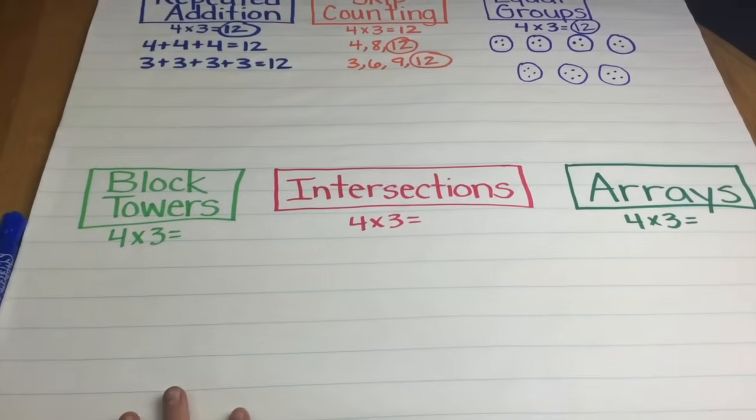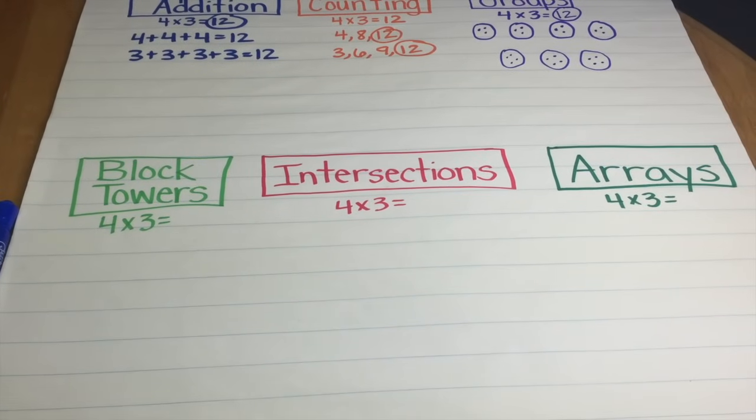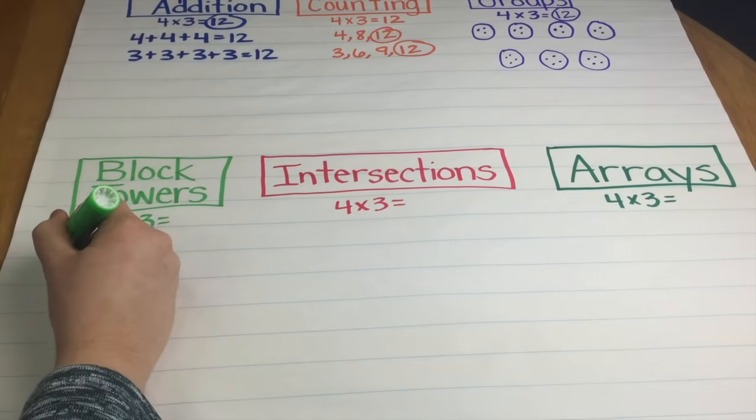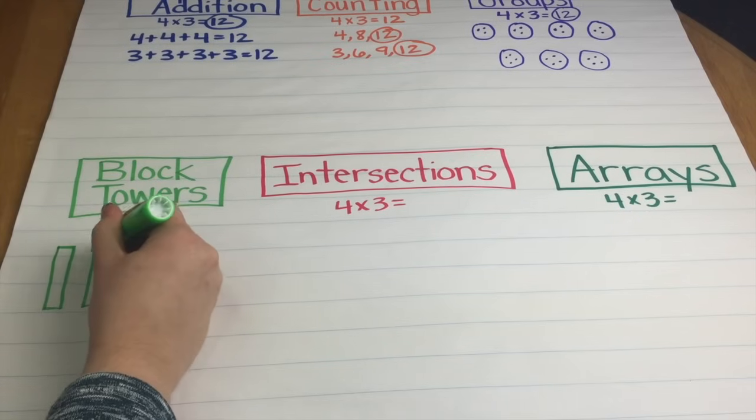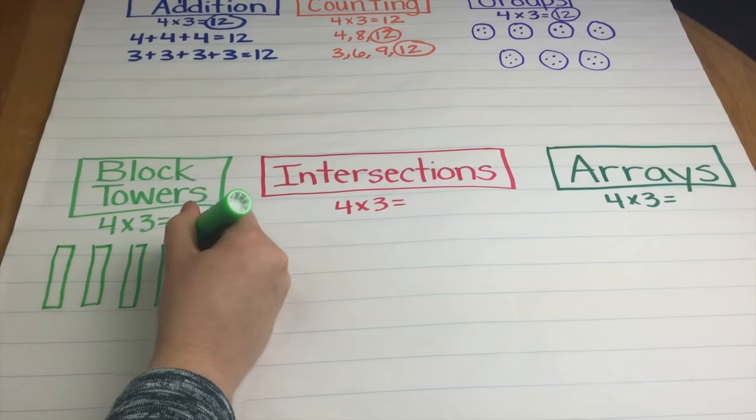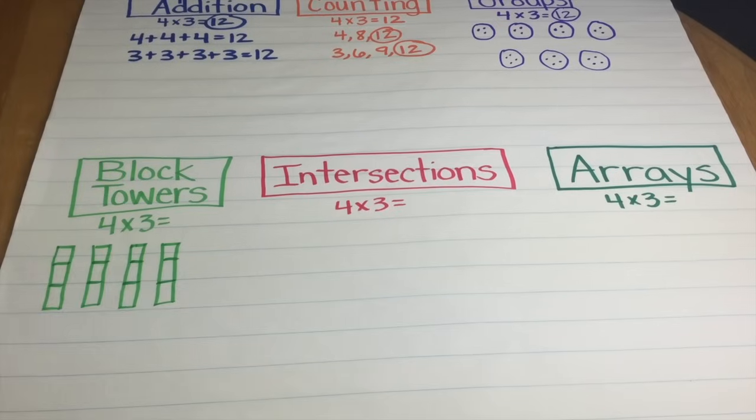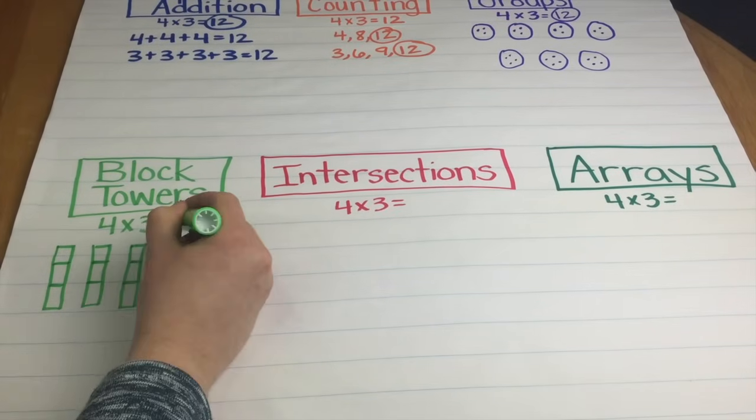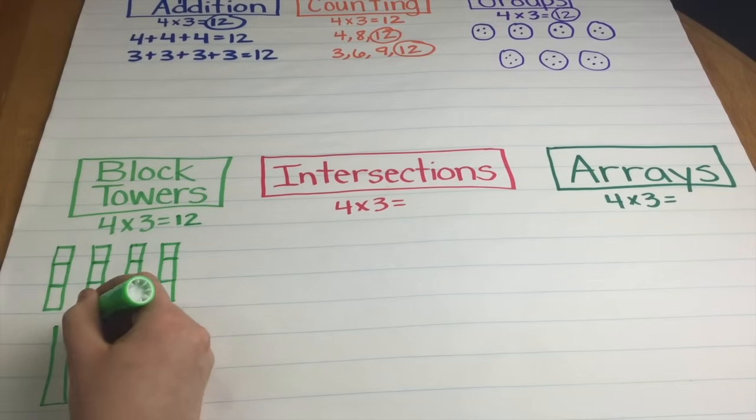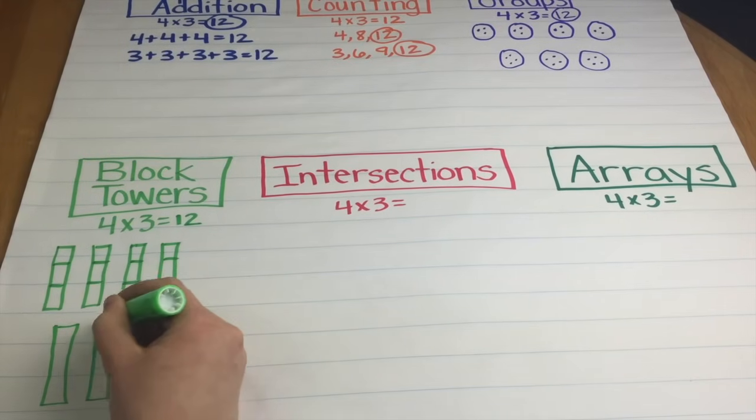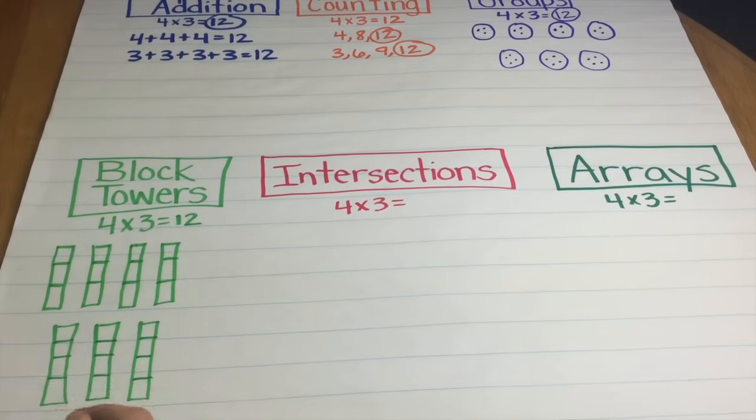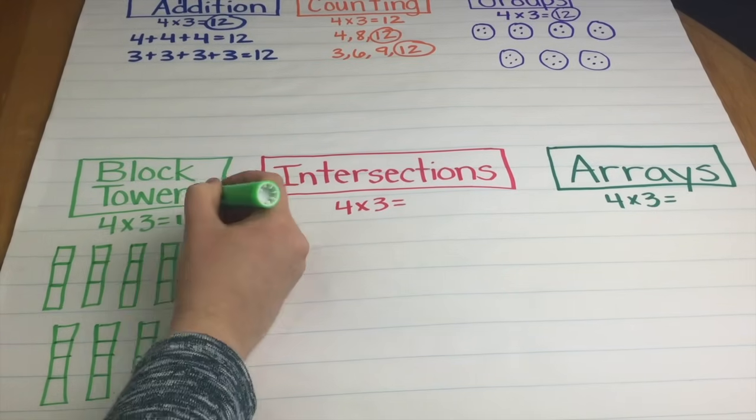And then the last 3 strategies I want to show you today, I'm going to go with block towers next. Again, this multiplication problem is 4 times 3. So I could choose to do 4 towers that are 3 high: 3, 6, 9, 12. Or I can choose to do 3 towers that are 4 units high: 4, 8, 12 for an answer of 12.